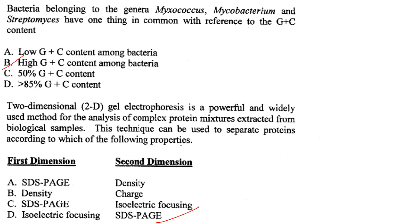Two-dimensional gel electrophoresis is used to separate proteins from complex mixtures. The first dimension uses isoelectric focusing and the second dimension uses SDS-PAGE. Answer is option D.